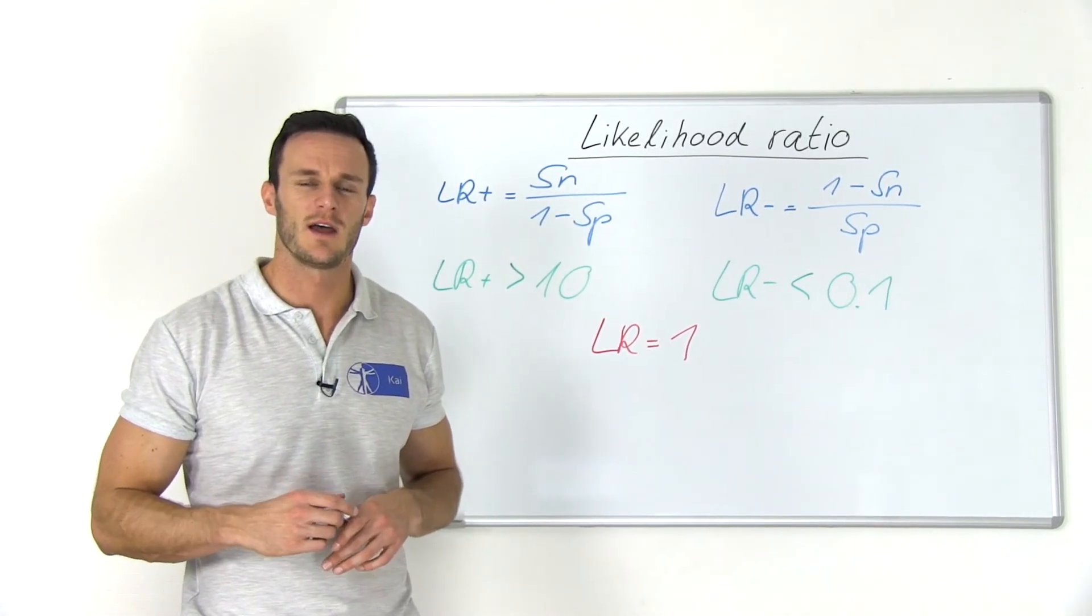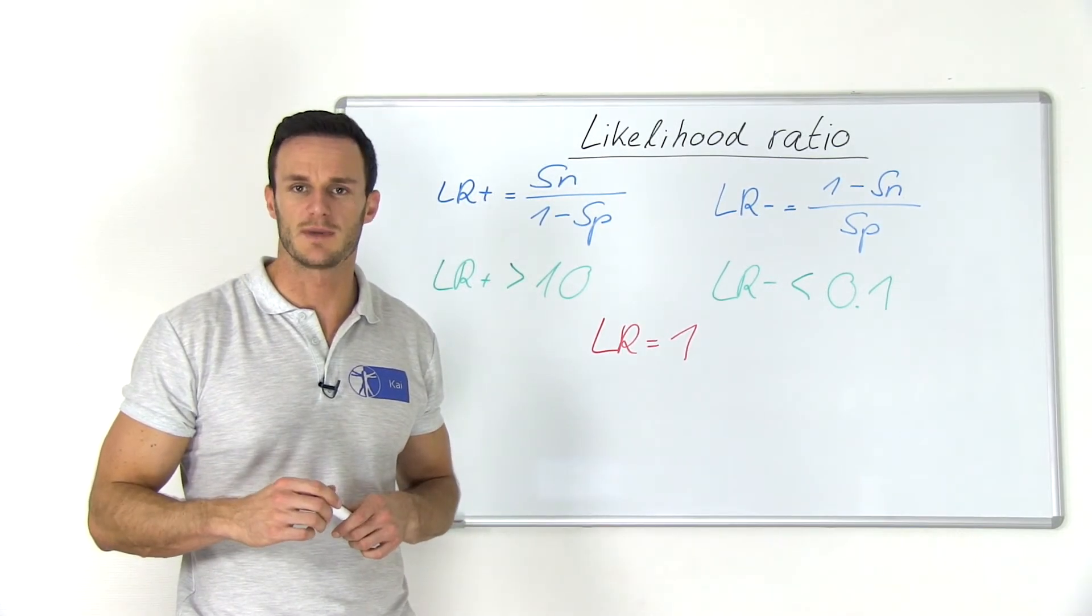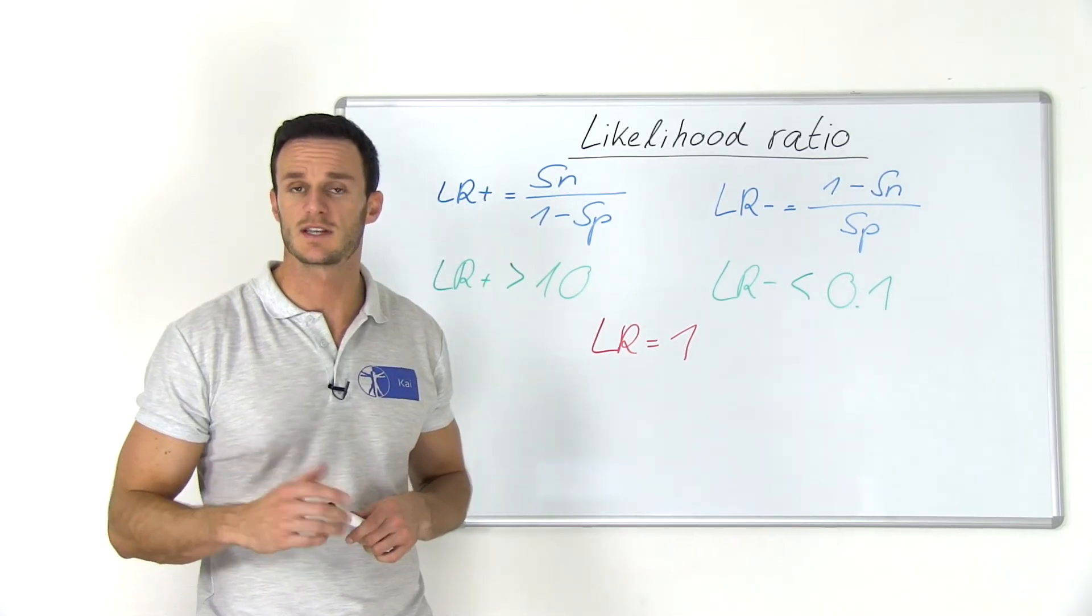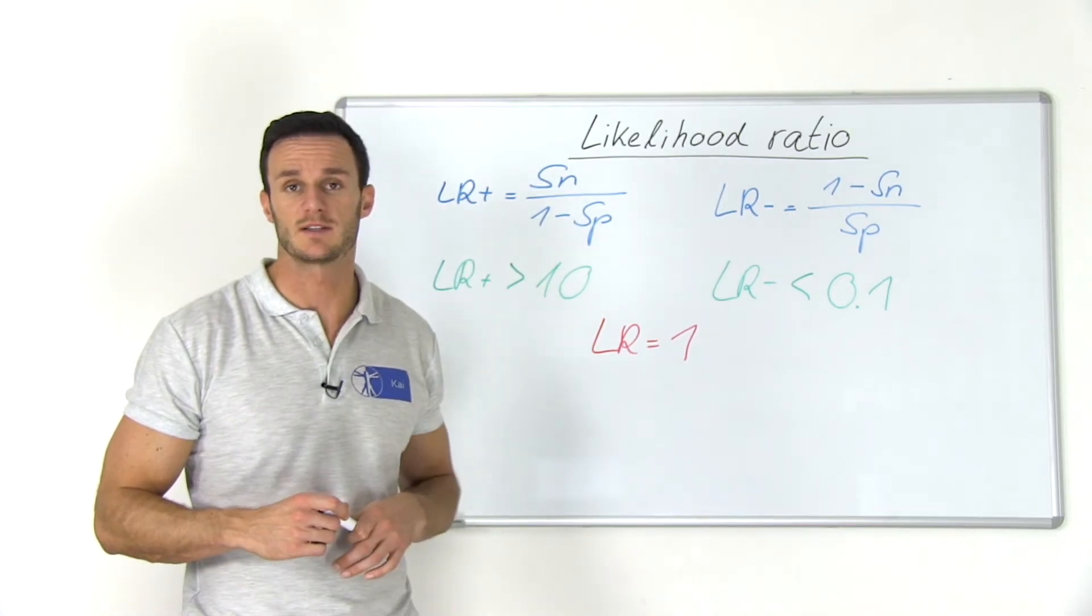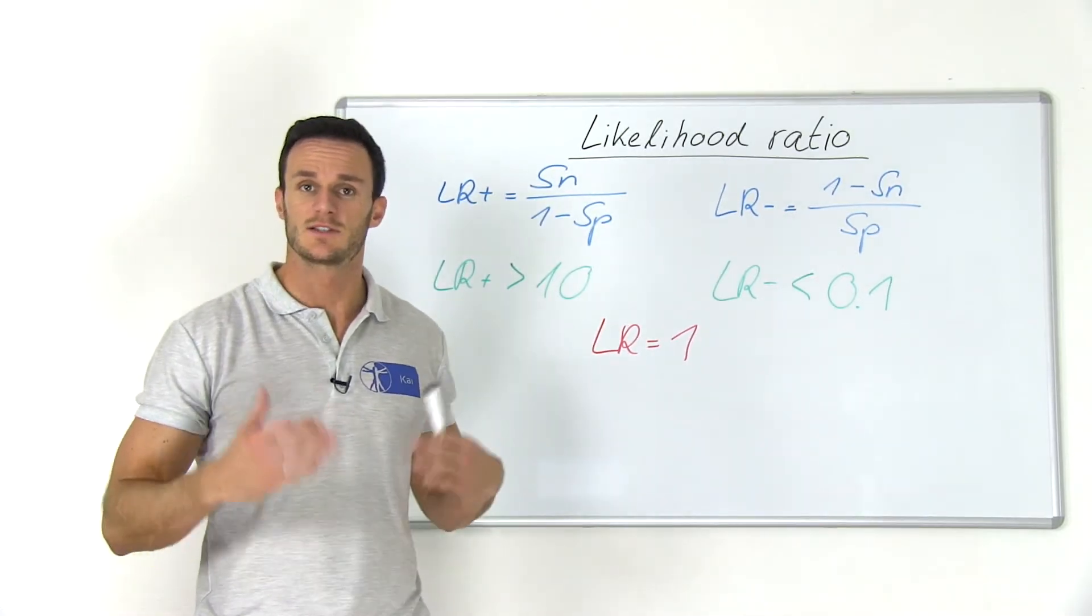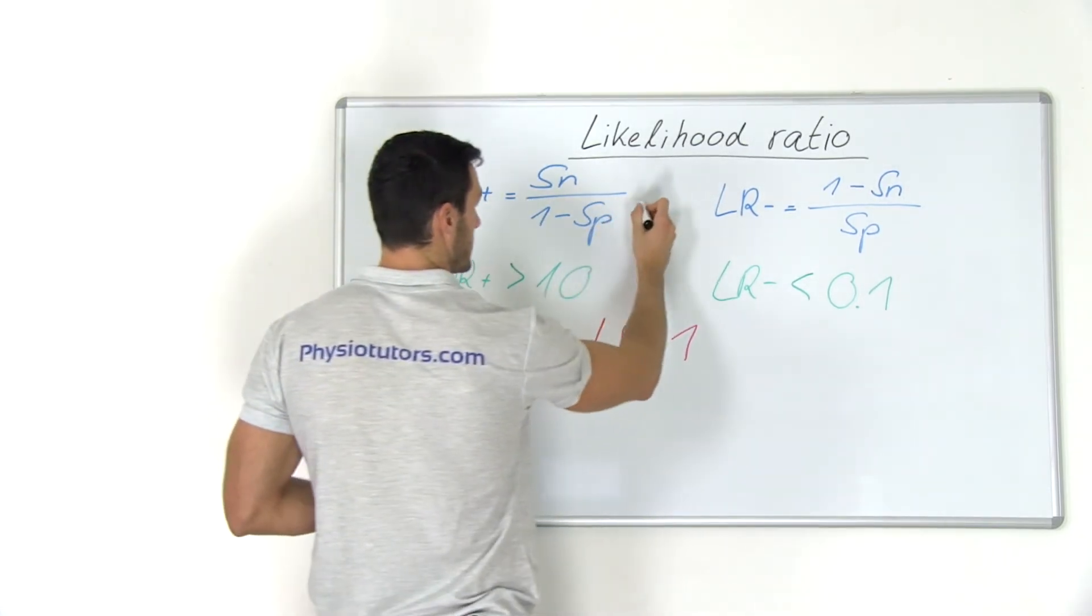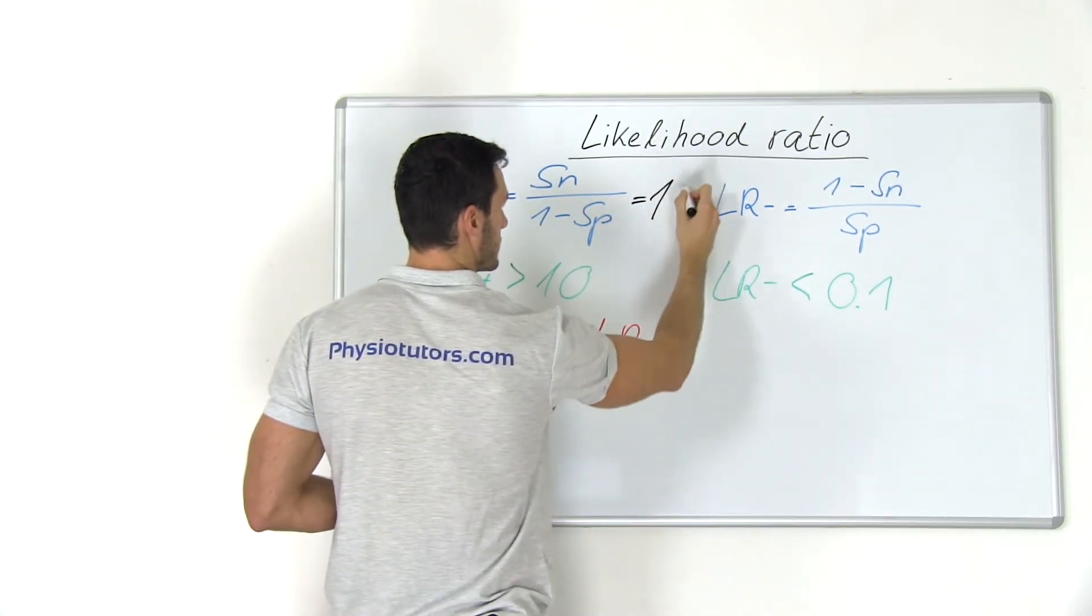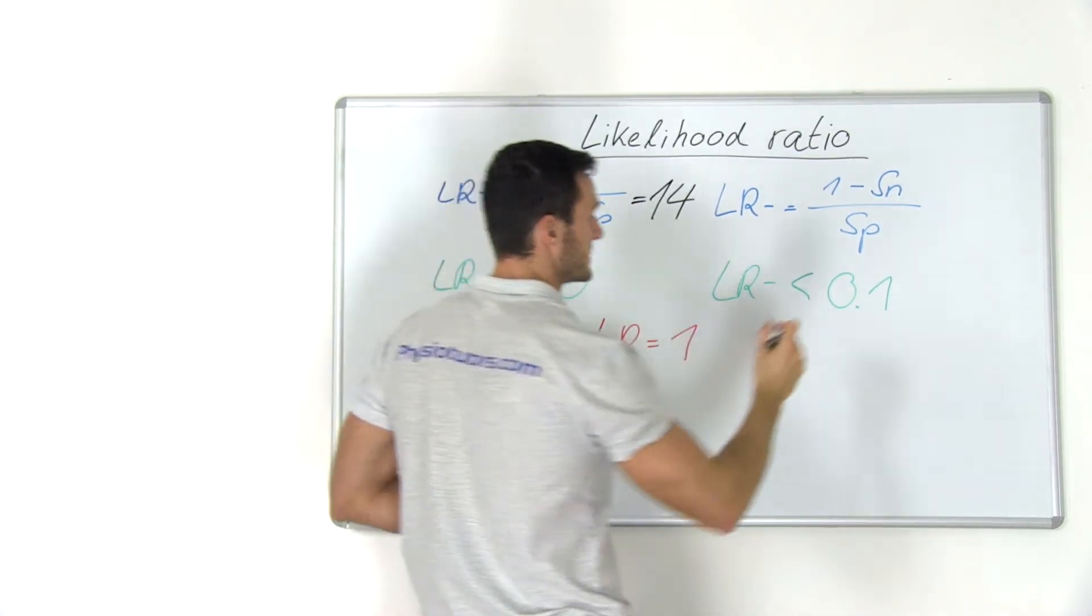So according to the meta-analysis of Benjamin et al. in the year 2006, the Lachmann test has a sensitivity of 85% and a specificity of 94%. So that results in a positive likelihood ratio of 14 and a negative likelihood ratio of 0.16.